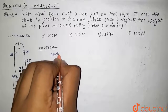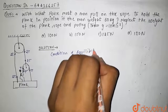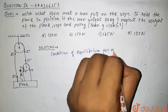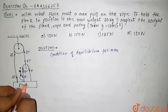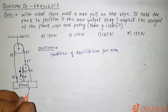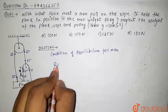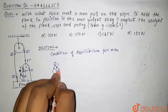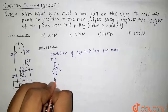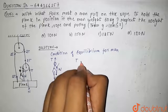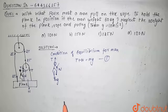We will firstly apply the condition of equilibrium for the man. Let us assume that the normal force acting on the man is N, so this equal and opposite force will also act on the plank. Drawing the free body diagram of the man: normal force N acts upward, tension T acts upward, and weight mg acts downward. So: T + N = mg. This is our first equation.